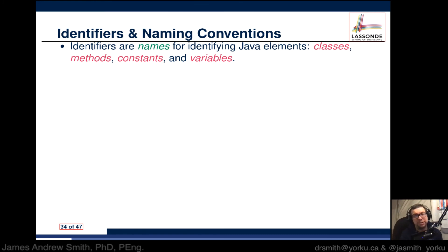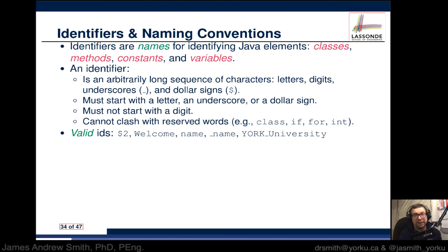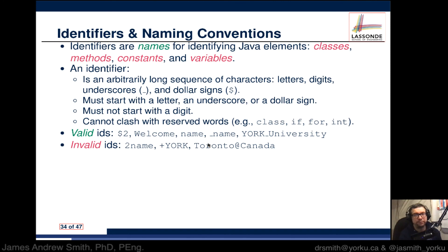Identifiers are names for identifying Java elements: classes, methods, constants, variables, etc. An identifier is an arbitrarily long sequence of characters — letters, digits, underscores, and dollar signs — but must start with a letter, underscore, or dollar sign, not a digit. Identifiers cannot clash with reserved words like 'class', 'if', 'for', or 'int'. Valid identifiers include: $2, Welcome (capital W), name, _name, and YorkUniversity with underscores and capitals. Invalid identifiers include: 2name, +york, or toronto@canada.